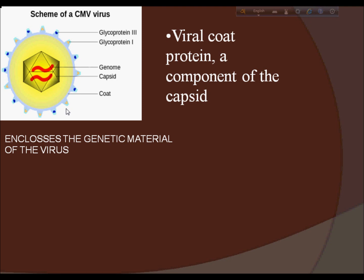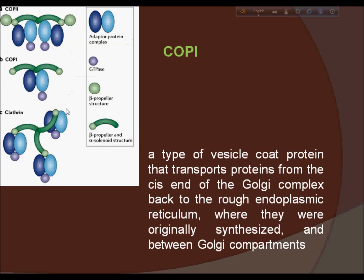Next, the topic of COP1. COP1 is a type of vesicle coat protein that transports proteins from the cis end of the Golgi complex back to the rough endoplasmic reticulum, where they were originally synthesized, and between Golgi compartments. This type of transport is termed retrograde transport, in contrast to the anterograde transport associated with the COP2 protein. The name COP1 refers to the specific coat protein complex that initiates the budding process on the cis-Golgi membrane, not at the endoplasmic reticulum.